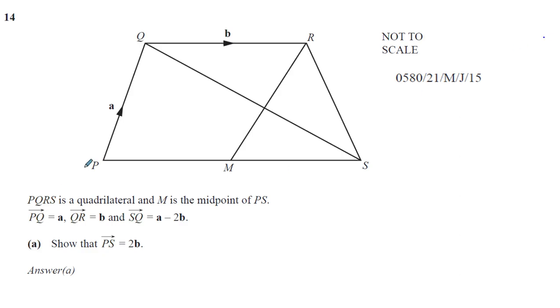Now PQRS is a quadrilateral, and M is the midpoint of PS, so that's like the ratio of 1 to 1. PQ is equal to A, which is already marked, QR is equal to B, which is already marked, and SQ is A minus 2B. So if I want to go from S to Q, it's going to be A minus 2B.